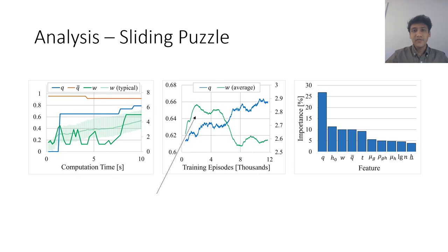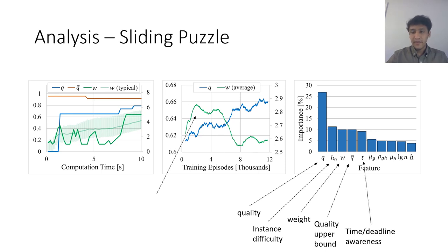This figure shows which features the trained DQN network is most sensitive to in decreasing order. The most important feature is the quality of the latest solution. The second most important feature is the heuristic of the starting state, which can be considered a measure of the difficulty of the instance. The next most important feature is the current weight. Then comes the quality upper bound, which is inversely proportional to the cost lower bound, that is the least F value in the open list. Then comes the time, which shows that the DQN approach is highly aware of the deadline. The rest of the features are the statistics in the open list.